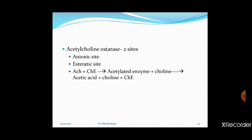The acetylcholinesterase enzyme has two sites in its chemical structure: the anionic site (negatively charged) and the esteratic site (positively charged). The cholinesterase enzyme combines with acetylcholine, becomes acetylated from the acetyl group of acetylcholine while the choline group is removed. The enzyme then separates from the acetyl group, yielding acetic acid plus choline plus the regenerated cholinesterase enzyme on hydrolysis.